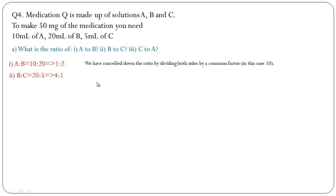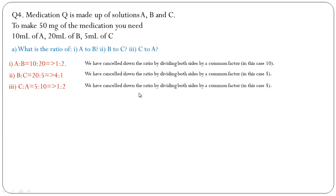We have cancelled down the ratio by dividing both sides by common factor, in this case 5. And C to A, that is 5 to 10. We have cancelled down the ratio by dividing both sides by common factor, in this case 5. The answer is 1:2, 4:1, and 1:2.